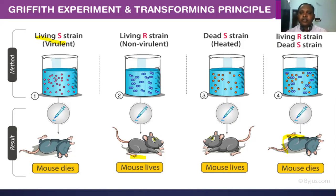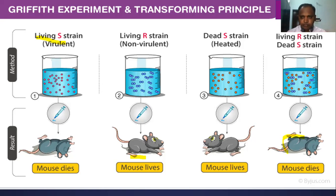His conclusion was that some compound of the dead S strain transformed the live R strain into live S strain, and the transformed S strain caused pneumonia killing the mice. However, Frederick Griffith did not conclude that the transforming agent was DNA — he concluded that some substance, whether protein, DNA, RNA, or carbohydrate, was responsible for the transformation of live R strain into live S strain.